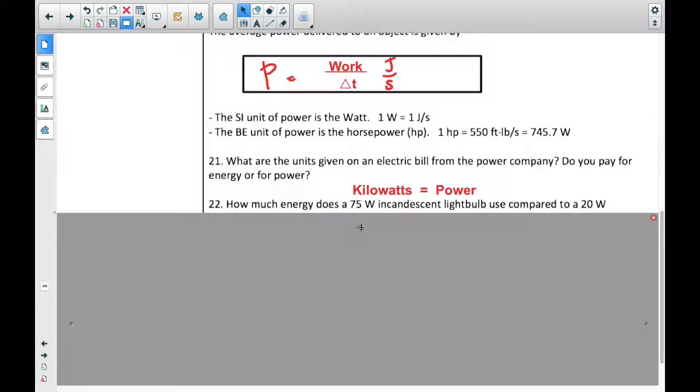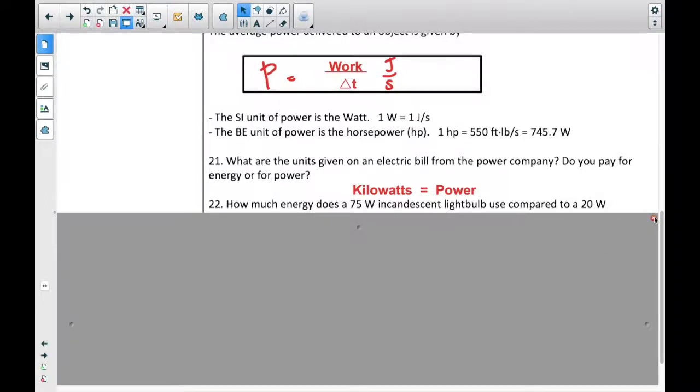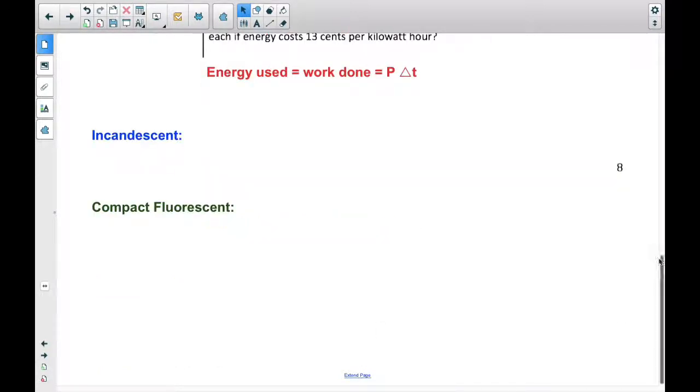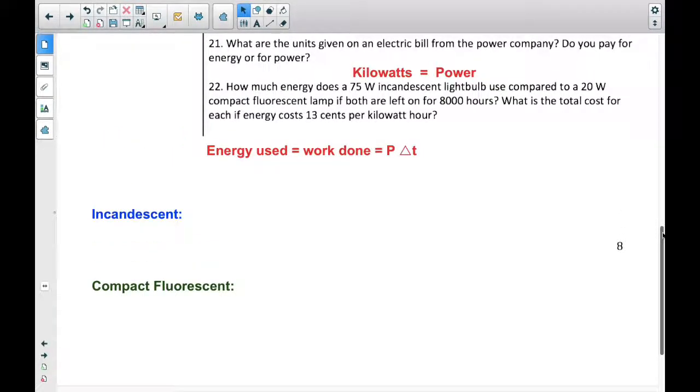Let's do one little example here. It's actually two examples kind of stuck together in one. How much energy does a 75 watt incandescent light bulb use compared to a 20 watt compact fluorescent lamp? If both are left on for 8,000 hours. So 8,000 hours seems like a long time. When they are selling light bulbs, they have to tell you the efficiency of that bulb.